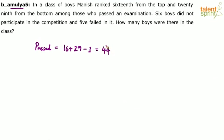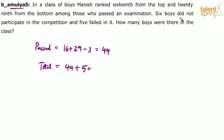Six boys did not participate and five failed. So how many boys are there in the class? The total will be passed (which is 44) plus failed (which is 5) and those who did not participate (six boys). So 44 plus 5 plus 6 gives us 55 as the answer.